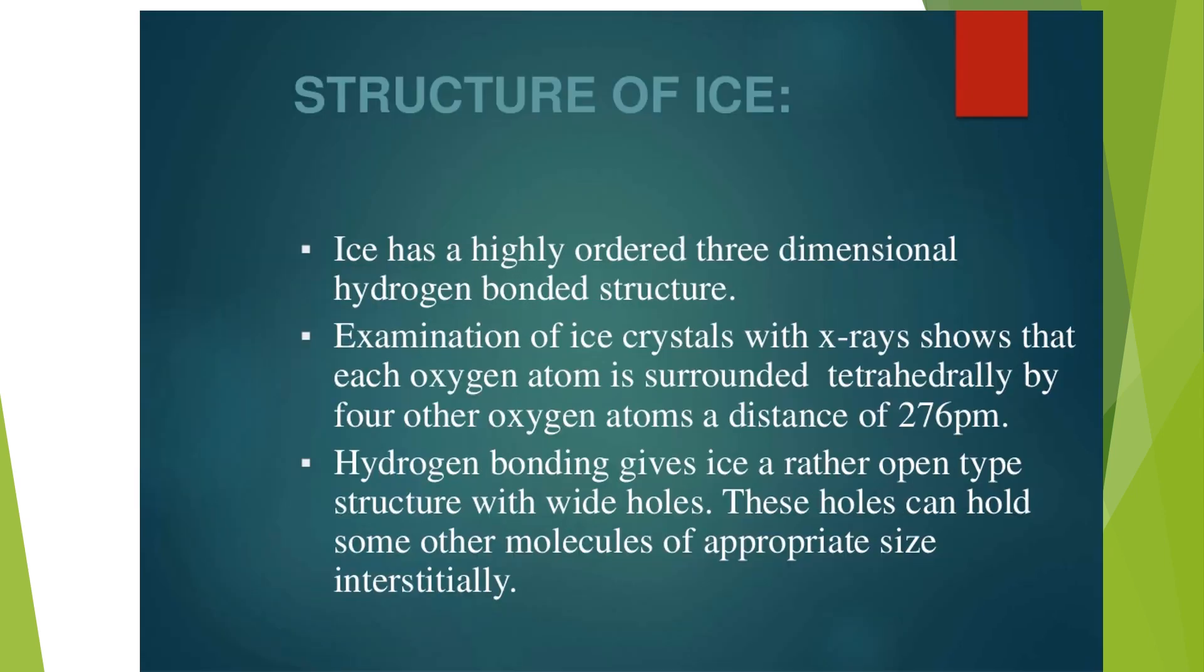Structure of ice: Ice has a highly ordered three-dimensional hydrogen-bonded structure. Examination of ice crystals with x-rays shows that each oxygen atom is surrounded tetrahedrally by four other oxygen atoms at a distance of 276 picometers. Hydrogen bonding gives ice a rather open-type structure with wide holes, and these holes can hold some other molecules of appropriate size interstitially.